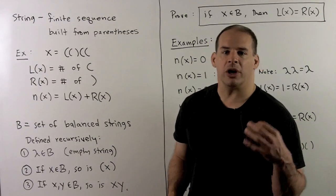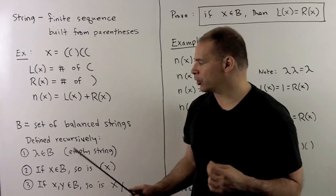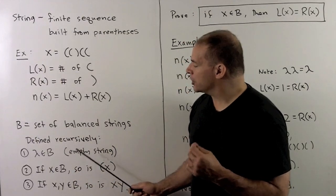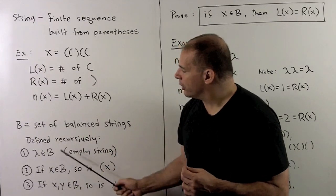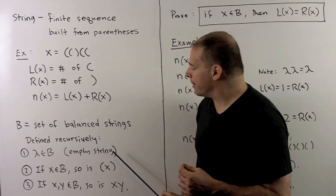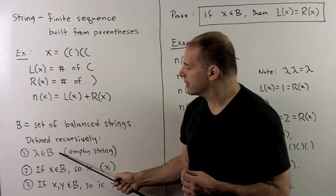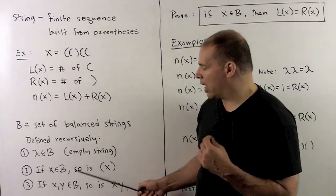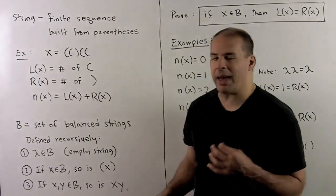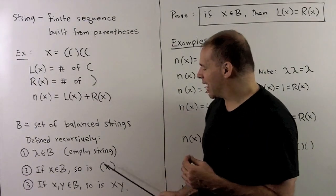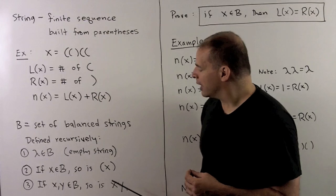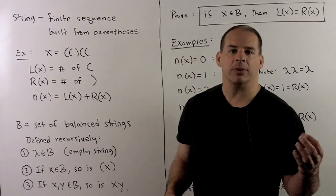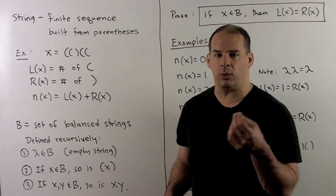Of particular interest, we're interested in the subset of balanced strings. These will be defined recursively. We have the following three rules. First, the empty string, which I denote by lambda, is balanced. Then to get all other balanced strings, we have the following two rules. If x is a balanced string, then so is left, x, right. And if we have x and y balanced, then so is xy — that means take x, concatenate with y.